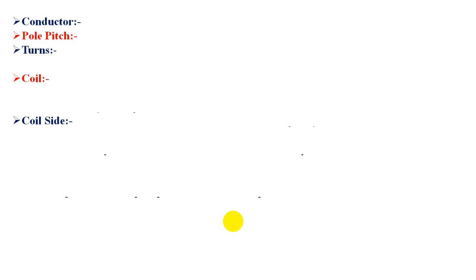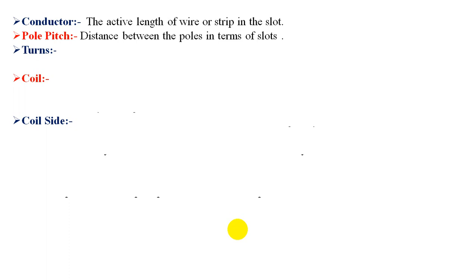Let us see some definitions. A conductor is the active length of a wire or strip in a slot. Pole pitch is specified in terms of number of slots — it is the distance between the poles in terms of slots. A turn consists of two conductors separated from each other by a pole pitch, connected in series, and the EMF will be additive in nature.